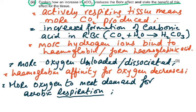The benefit of this effect is that more oxygen is released for aerobic respiration. If insufficient oxygen were available, anaerobic respiration would start and produce lactic acid, which we want to avoid. So the Bohr effect ensures actively respiring tissues — which need more oxygen — receive more oxygen, delaying the onset of anaerobic respiration.